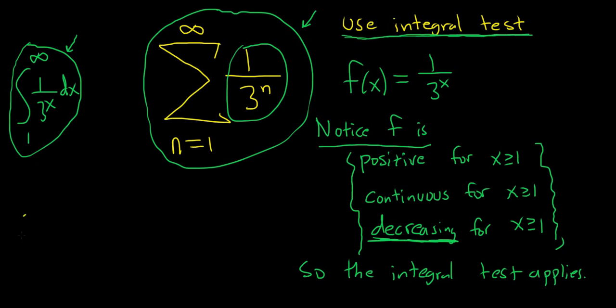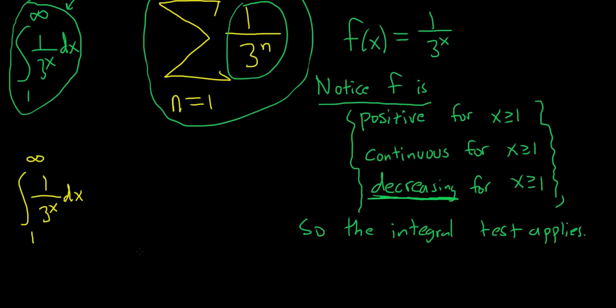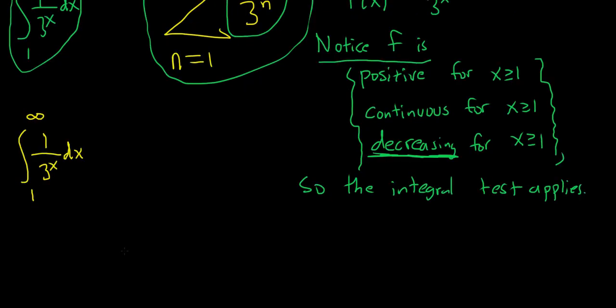Let's go ahead and look at this integral. So we're going from 1 to infinity of 1 over 3 to the x dx. And this is pretty easy to integrate. Let's first maybe rewrite it though. This is 1 to infinity. Let's write it as 1 third to the x. You can certainly do that because you can write 1 as 1 to the x and then use properties of exponents.